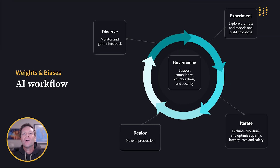The AI workflow may look slightly different from workplace to workplace, but we've distilled it down to four phases: Experiment, iterate, deploy, and observe. This demo will highlight the role of Weave in each phase as we develop our retail support agent.